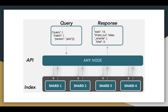The query goes to the API and then that API looks for the match of the person Jack in the index, which contains some shards. Then the result is sent back from the same node as a response, which is also in JSON format.